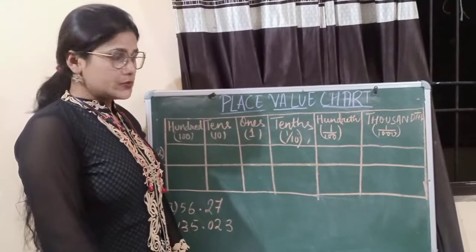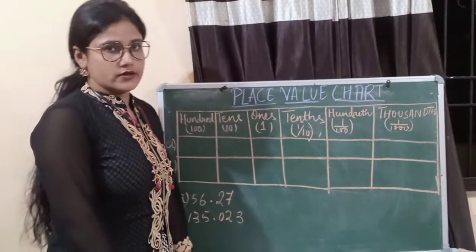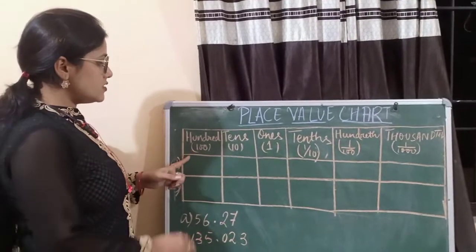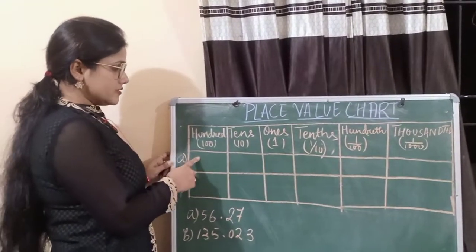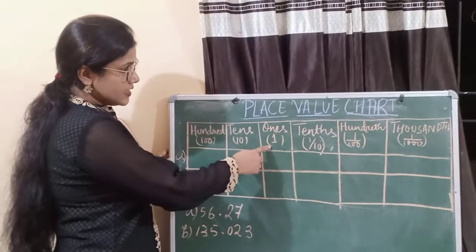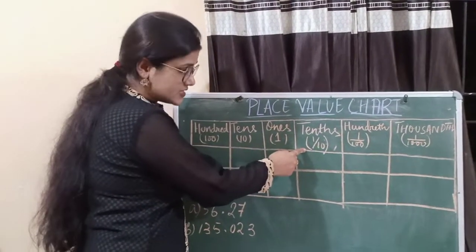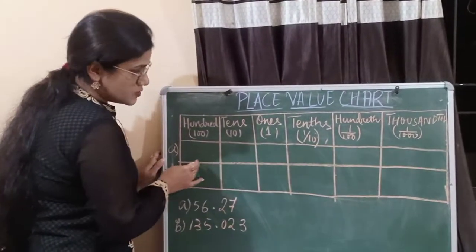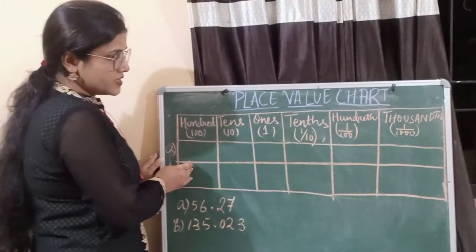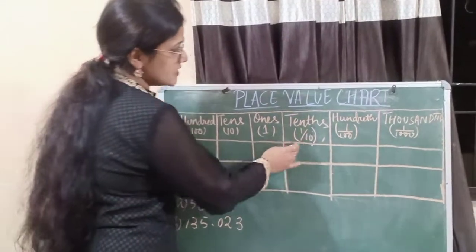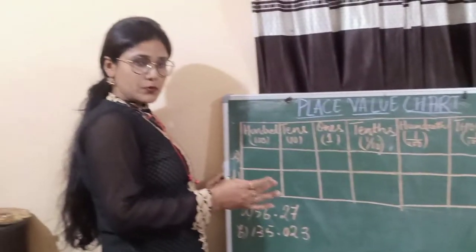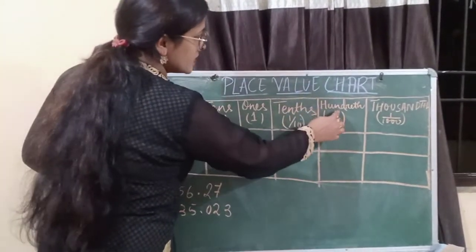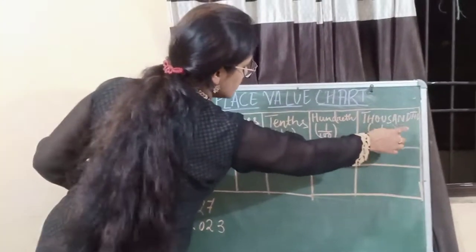So let's start with the place value chart. A decimal number also has a place value chart, and the place values are as follows: 100s, 10s, 1s. And as you see, after the 1s place, the decimal places start. These are the numbers before the decimal point, and these are the numbers after the decimal point. After the decimal point, the places are 10ths, 100ths, 1000ths, etc.